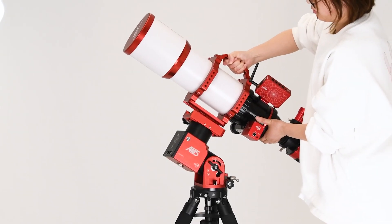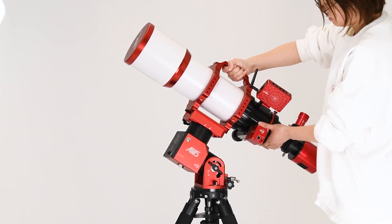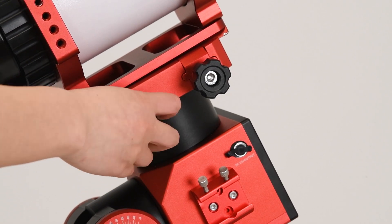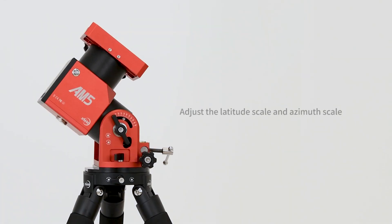Install the telescope on the dovetail slotted saddle plate. Adjust the latitude scale and azimuth scale as necessary. Begin polar aligning. Maintain balance during this process and take note of the weight distribution of the telescope to avoid a collapse. Adjust weighted bag as needed.